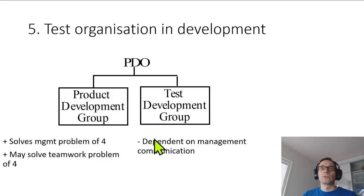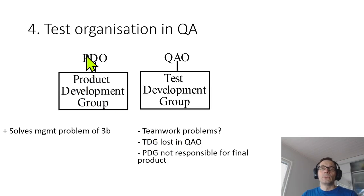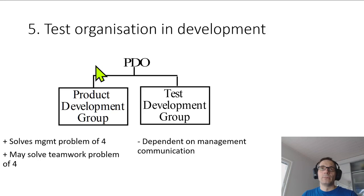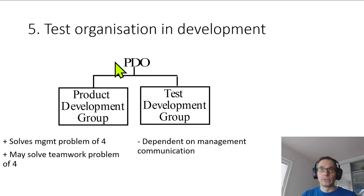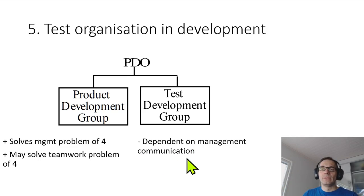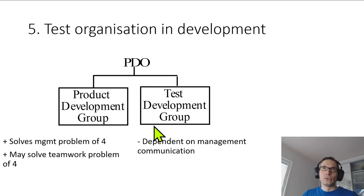Another approach according to Kitt is to put the testing inside the product development organization. You have a product development group and a test development group, and the product development organization as a whole is now responsible for quality. Still, this is somewhat dependent on management communication and there could still be the 'throwing it over the wall' syndrome, with potential issues in teamwork between the two groups.